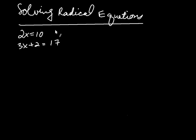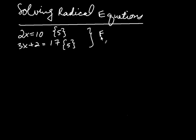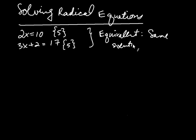The number that makes the first equation true is 5 — let me put that in braces. You may notice that 5 also makes the second equation true. So 5 is the only number that makes both equations true. For that reason, we call these equations equivalent. When somebody says two equations are equivalent, it means they have the same solution set — the same set of numbers makes both equations true.